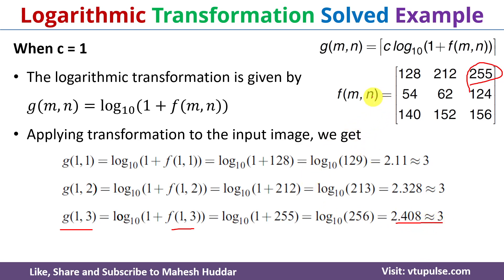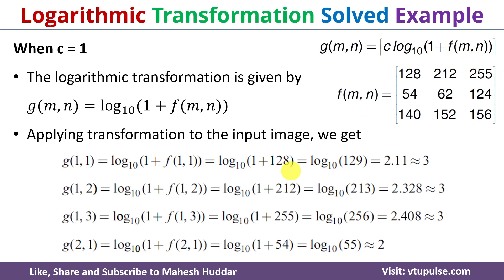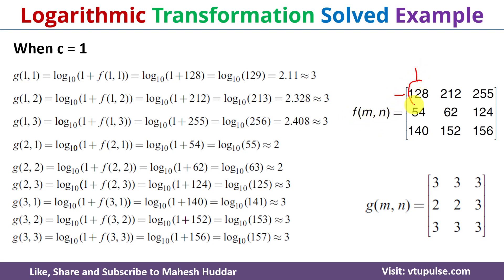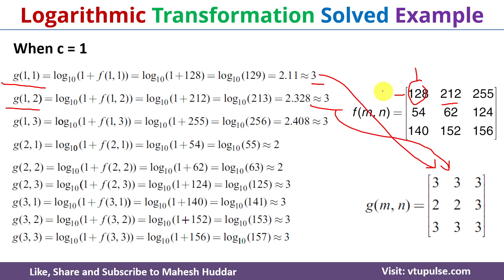Similarly we will find the remaining values for the second row and third row with respect to first, second, and third columns. Once you find all the remaining values we get the output matrix g. For example, f(1,1) is 128 and g becomes 3. And f(1,3) is 255 and g(1,3) is 3. This is the logarithmic transformation of the given input image for the value c equal to 1.